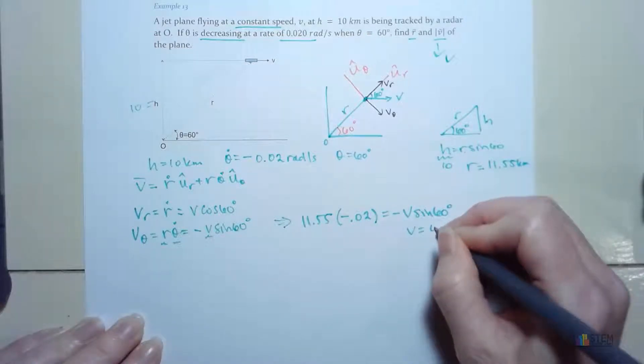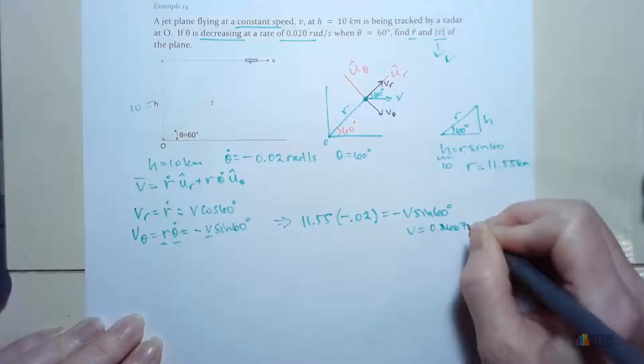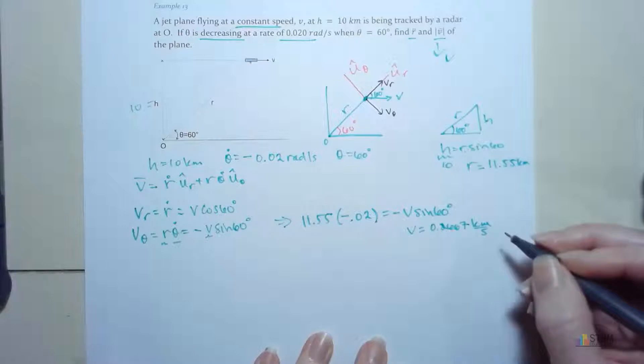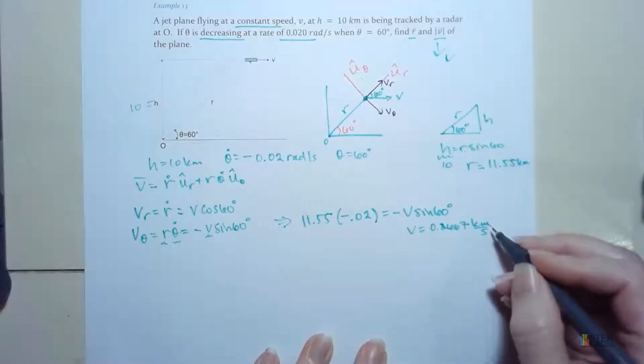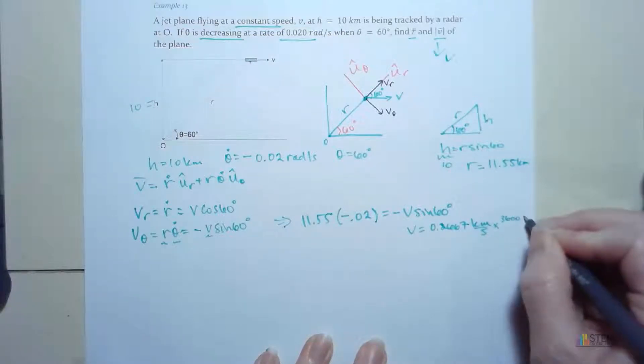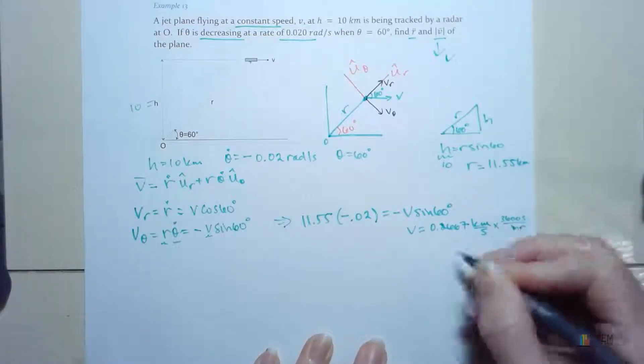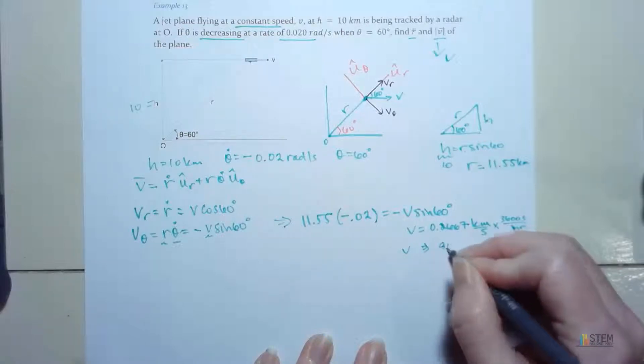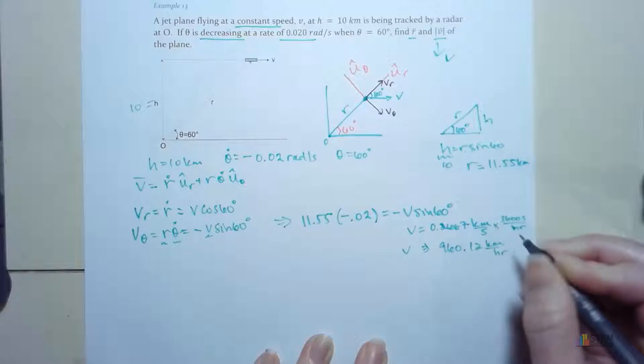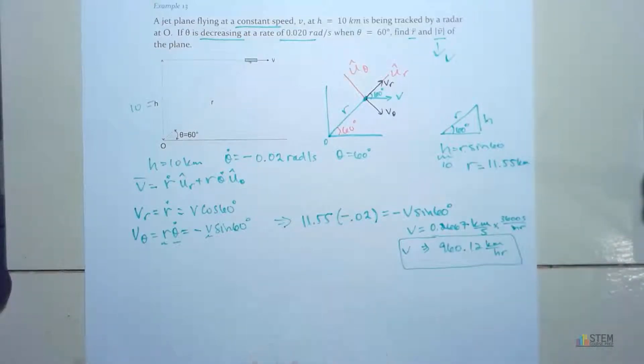So that's going to give you 0.2667 kilometers per second. And usually you want it in kilometers per hour. So if we convert this over, that's 3,600 seconds per hour. So then that gives us a V of 960.12 kilometers per hour. So that's how you'd go about finding that. And we did it that way because we didn't know R dot.